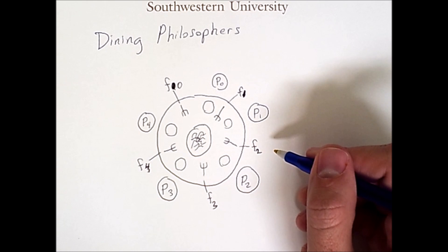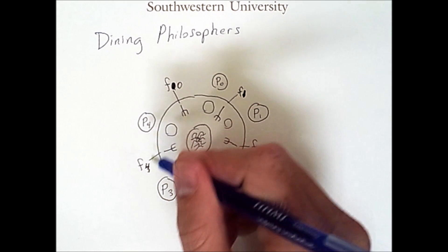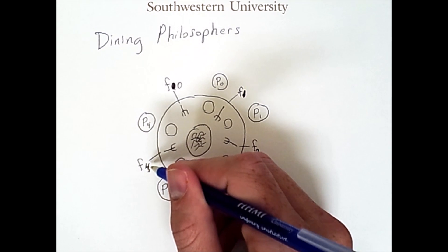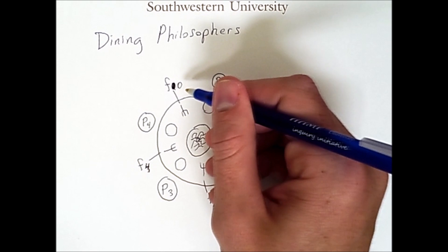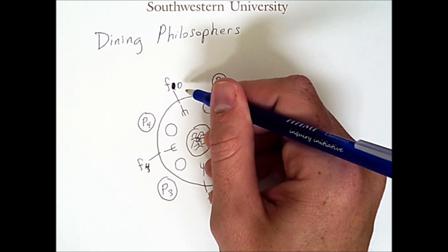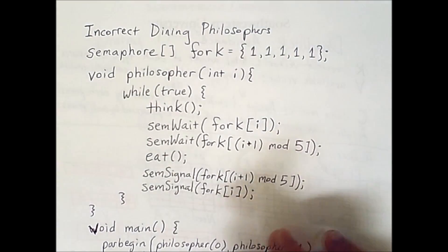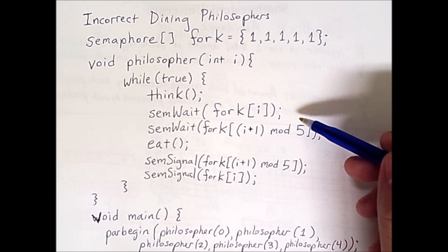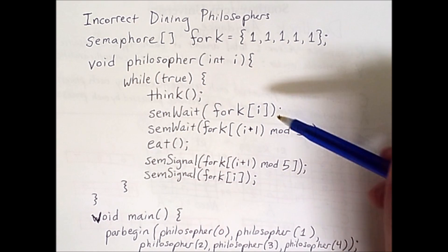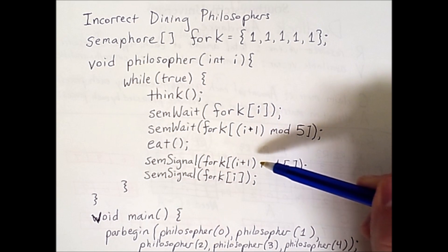In fact, the only reason for the mod 5 to be in there is because of philosopher 4. Philosopher 4 will claim fork 4, and then also 4 plus 1 mod 5, which equals 0 because the remainder of 5 divided by 5 is 0. This modulus gives us a nice way of representing the fact that the table is circular. Essentially, all this code is saying is that after thinking for a while, a philosopher grabs the fork on the right, then the fork on the left, then eats, and then puts the forks back one by one.